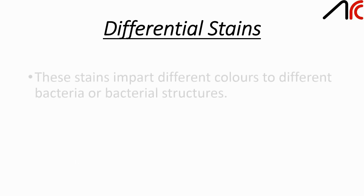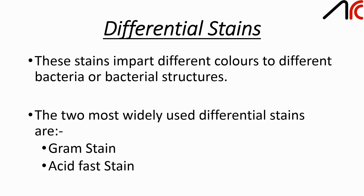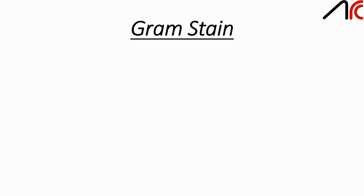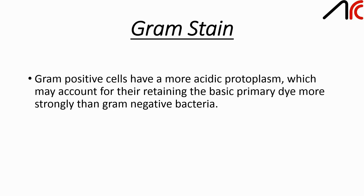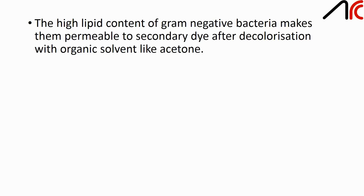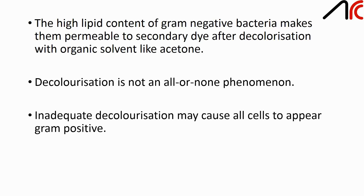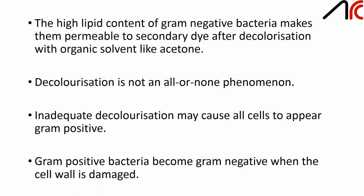Differential staining: these stains impart different colors to different bacteria or bacterial structures. The two most widely used differential stains are gram stain and acid fast stain. Gram positive cells have more acidic protoplasm, which may account for their retaining the basic primary dye more strongly than gram negative bacteria. The peptidoglycan of gram positive bacteria is thick and thus able to retain the dye-iodine complex. The high lipid content of gram negative bacteria makes them permeable to secondary dye after decolorization with an organic solvent like acetone. Decolorization is not an all-or-none phenomenon. Inadequate decolorization may cause all cells to appear gram positive. Gram positive bacteria become gram negative when their cell wall gets damaged.